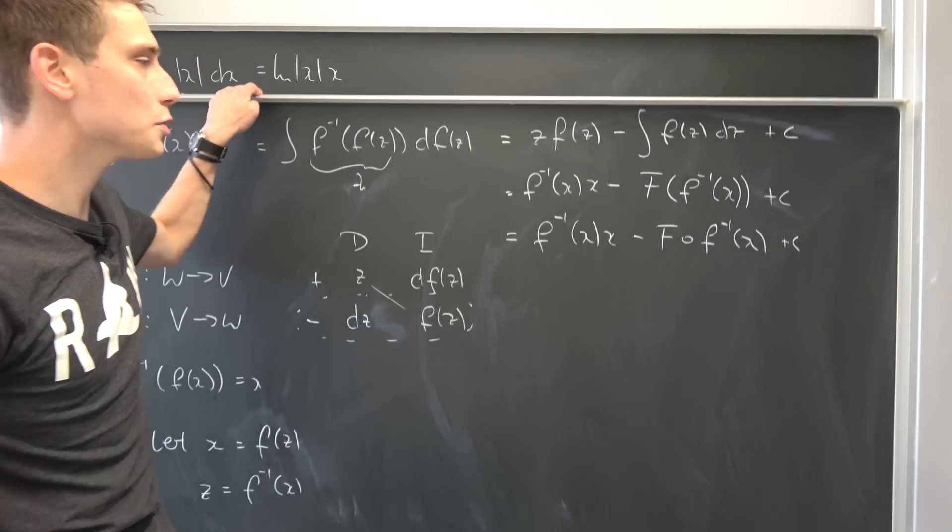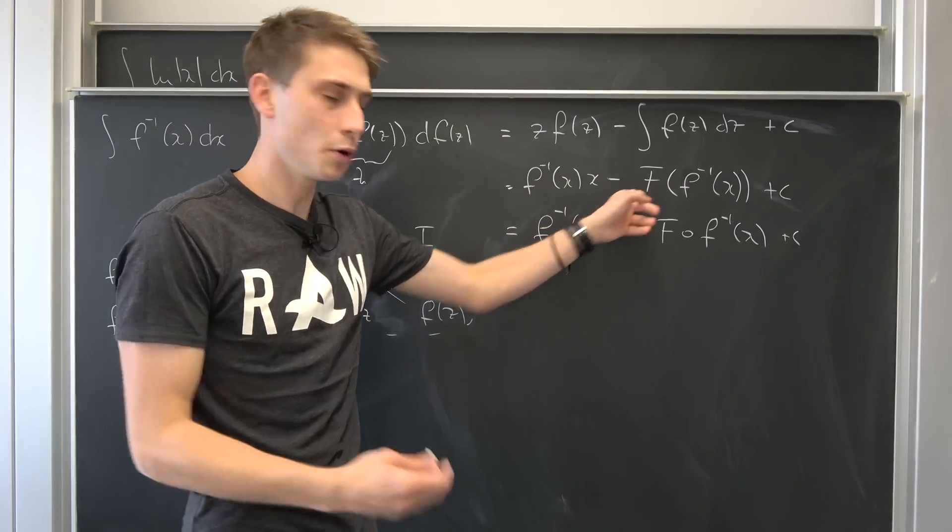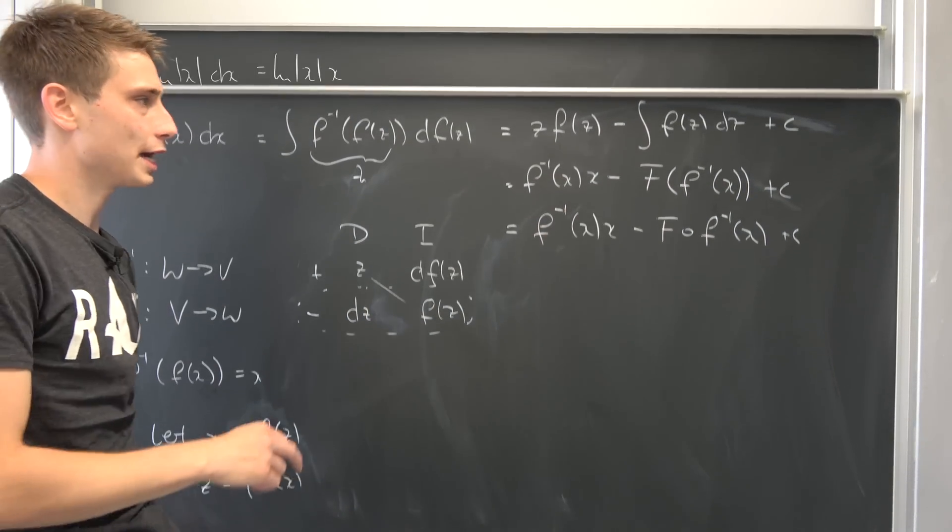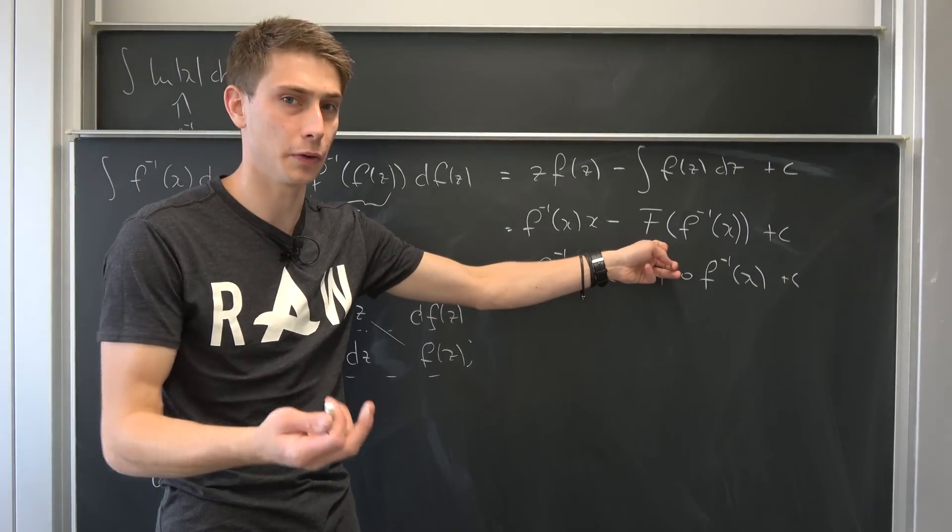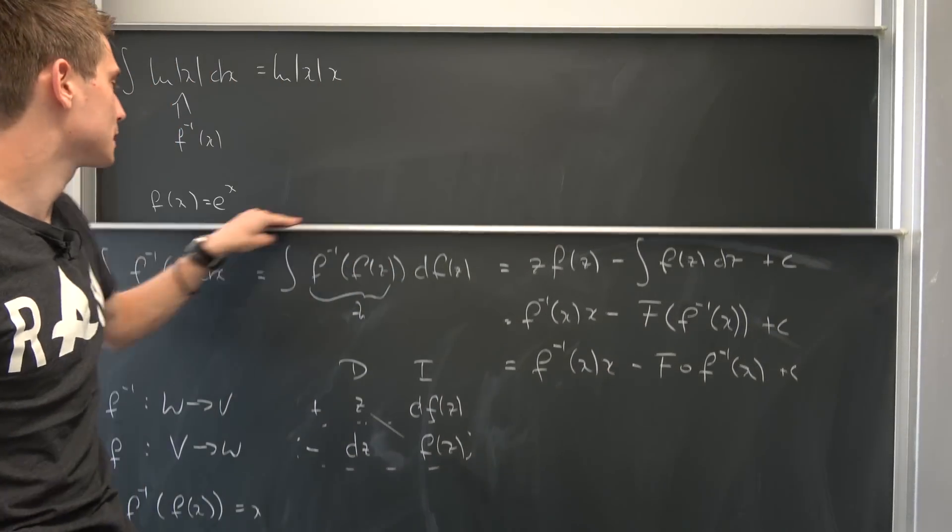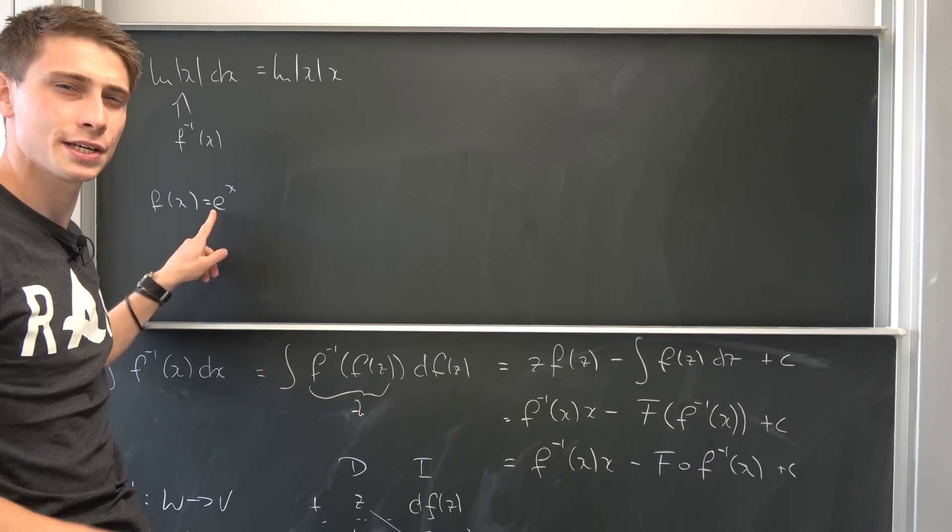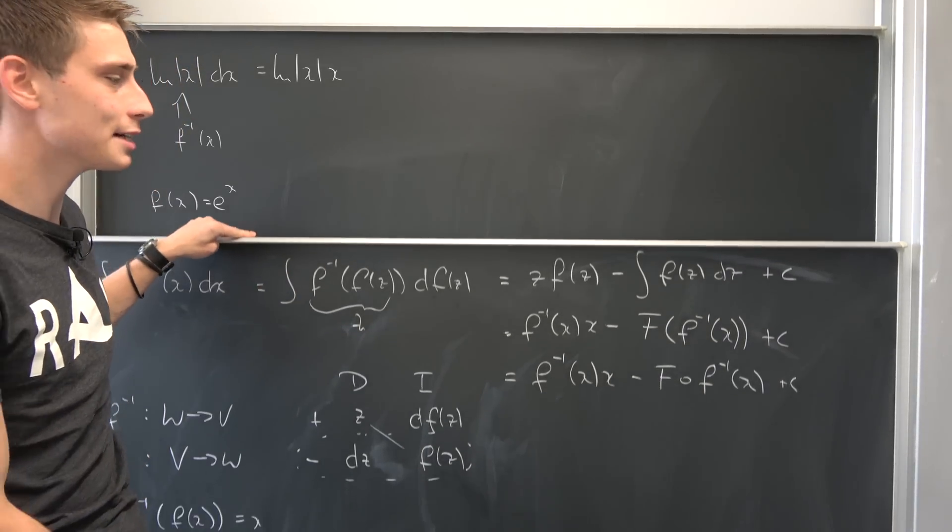And then we have to use the primitive of e to the x, because this is the inverse function of our inverse function and the primitive at that. But what is the integral, the primitive of e to the x? That's just e to the x, so that's nice.